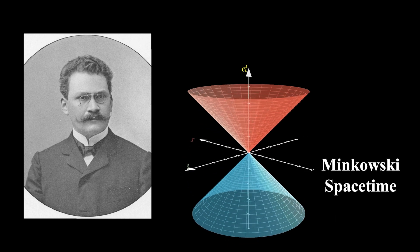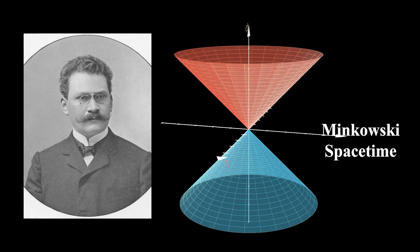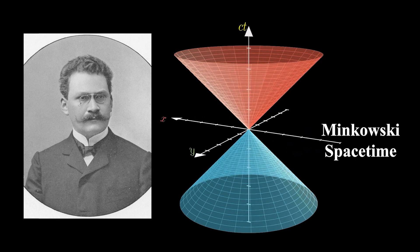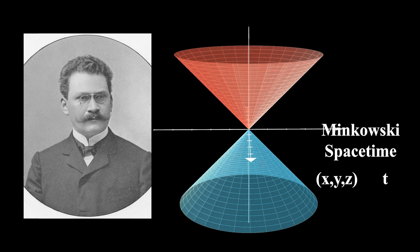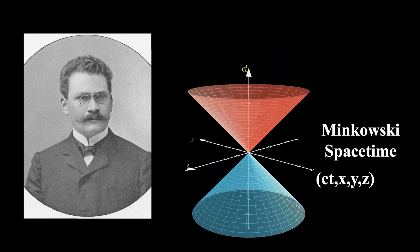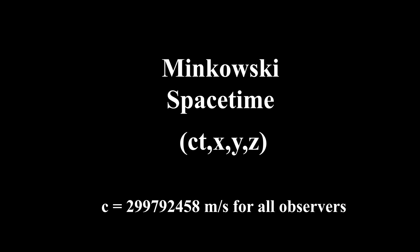Hermann Minkowski provided a mathematical framework that helped us understand Einstein's theory of special relativity more deeply. Minkowski spacetime is defined using a four-dimensional coordinate system. This system extends classical mechanics' spatial coordinates x, y, z by adding a time dimension t. The time dimension is multiplied by the speed of light to make it compatible with the spatial dimensions. Since the speed of light is constant for all observers, multiplying the time coordinate by the speed of light does not create any inconsistencies. Although the unit of the time axis appears to be a length unit, it represents the distance light travels in a given time, meaning the time axis remains fundamentally tied to time itself.